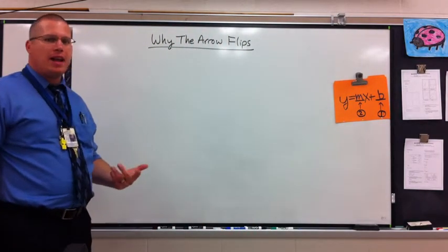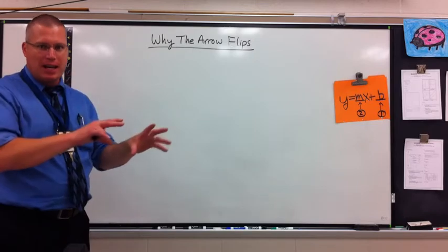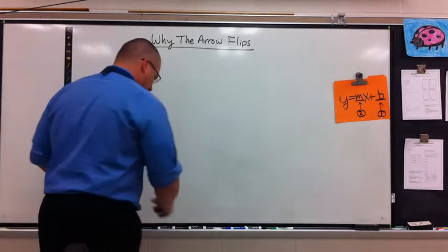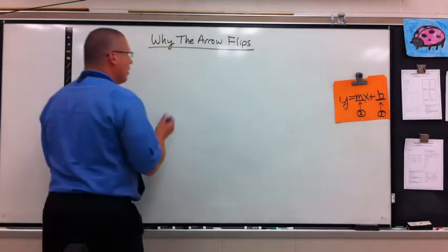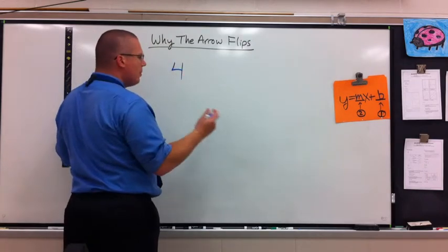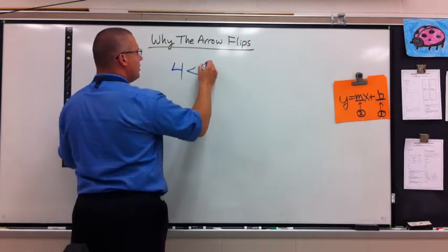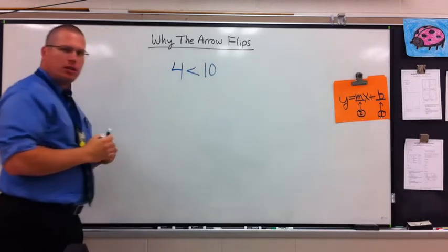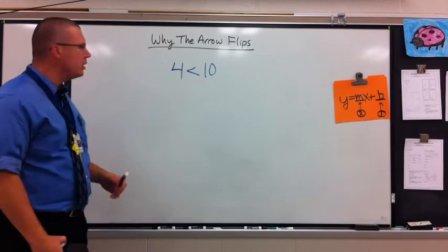I want to take a look at why the arrow flips when I multiply by a negative in an inequality. This is a real quick example of why it works. I'm going to make an inequality using numbers. 4 is less than 10. This is a true statement — we know that 4 is less than 10.